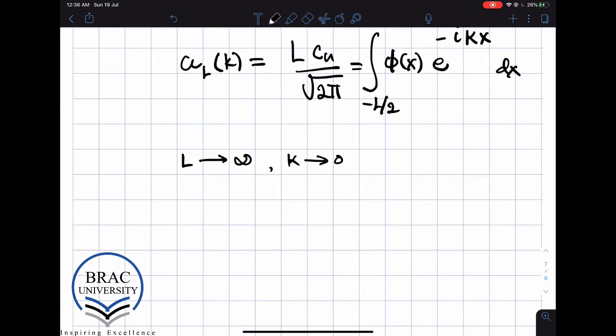And then in that limit, this a_L of k becomes a_k. I'm going to call them a_k. And a_k is the limit where L goes to infinity of a_L of k. And in that limit, my expression for the new Fourier coefficient becomes φ(x)e^(-ikx) dx.